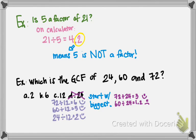That implies that 12 is a factor of all 3: 24, 60, and 72. That takes care of the common part. Now, the greatest part comes from the fact that it is the biggest number that all 3 of them share.